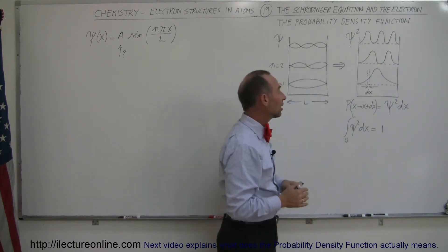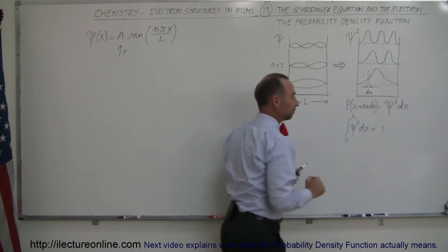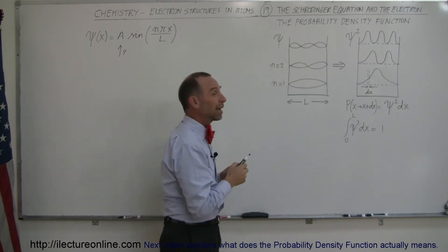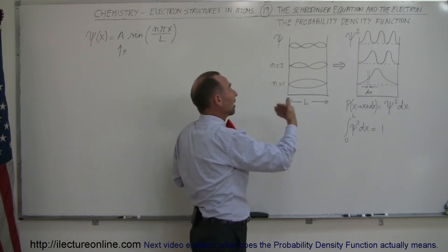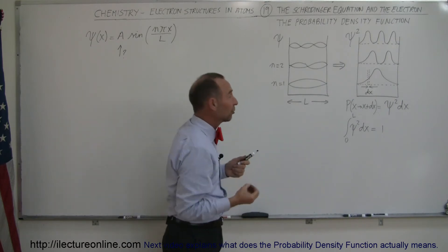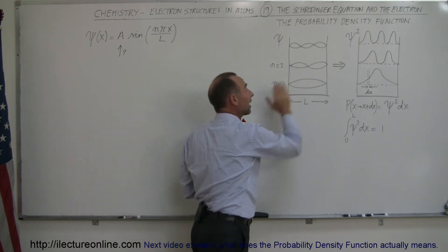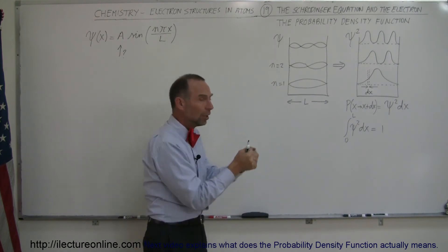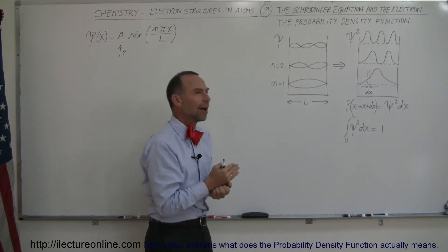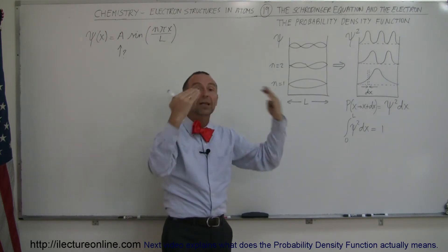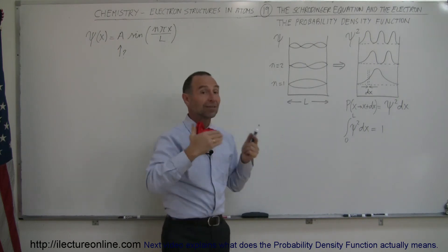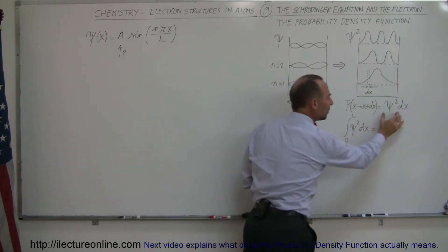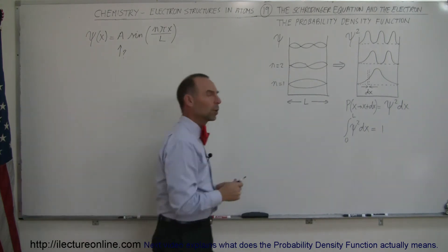We see this pattern — the probability density can be found by simply squaring the wave function. The wave function itself doesn't truly describe where the electron is at all times; it helps us understand mathematically how an electron, being a very small particle acting like a wave, can exist inside a box. But if we square that wave function, we can actually determine the probability of where that electron will be. That defines the structure of an atom and where electrons are placed in orbitals.